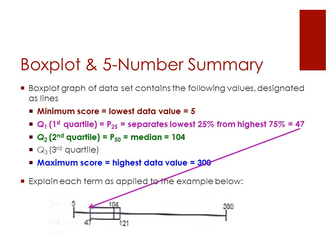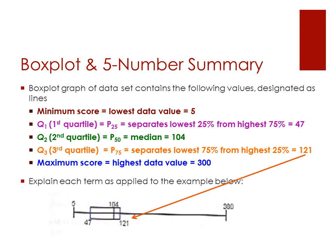The first quartile is equivalent to P25. It separates the lowest 25% from the highest 75% of the scores. In this example, we see it's 47. The third quartile is P75 and it separates the lowest 75% from the highest 25%. In this example, its value is 121.